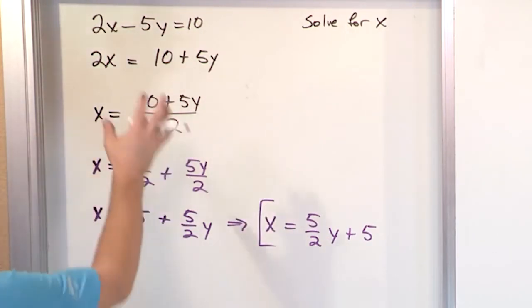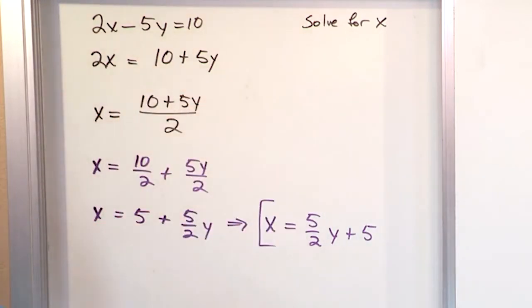So solving for a variable, even if you have other additional variables in the problem, is not difficult. You just have to move everything over to the other side just like for any other problem.